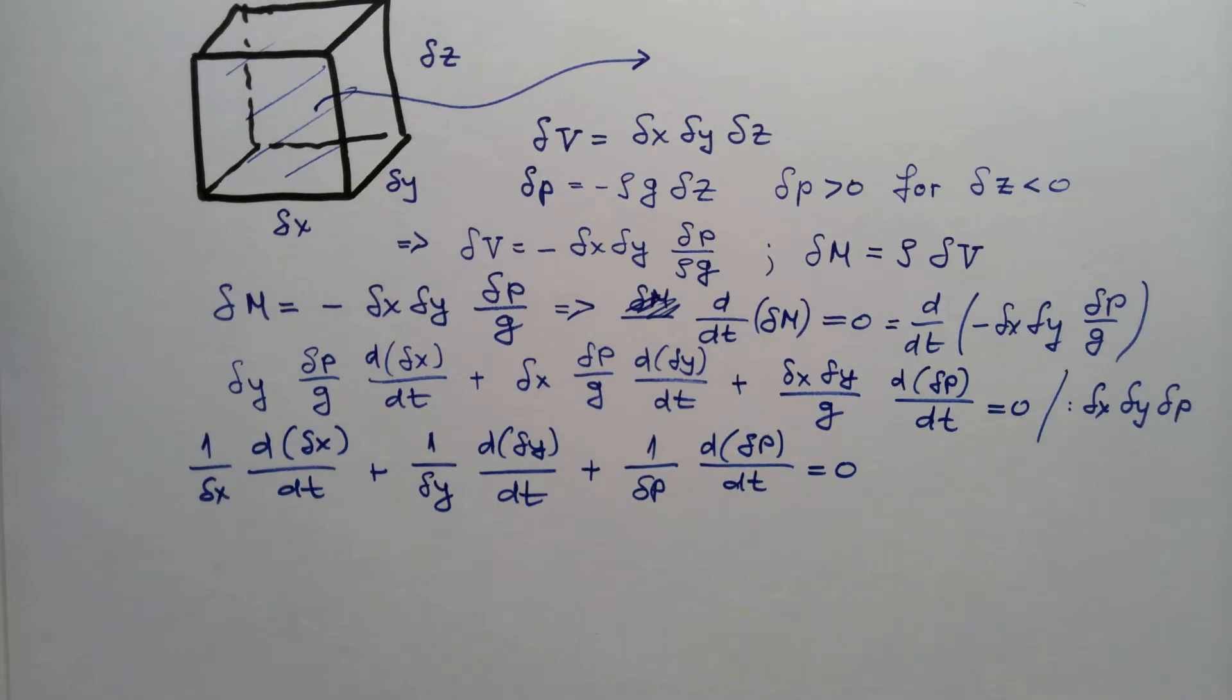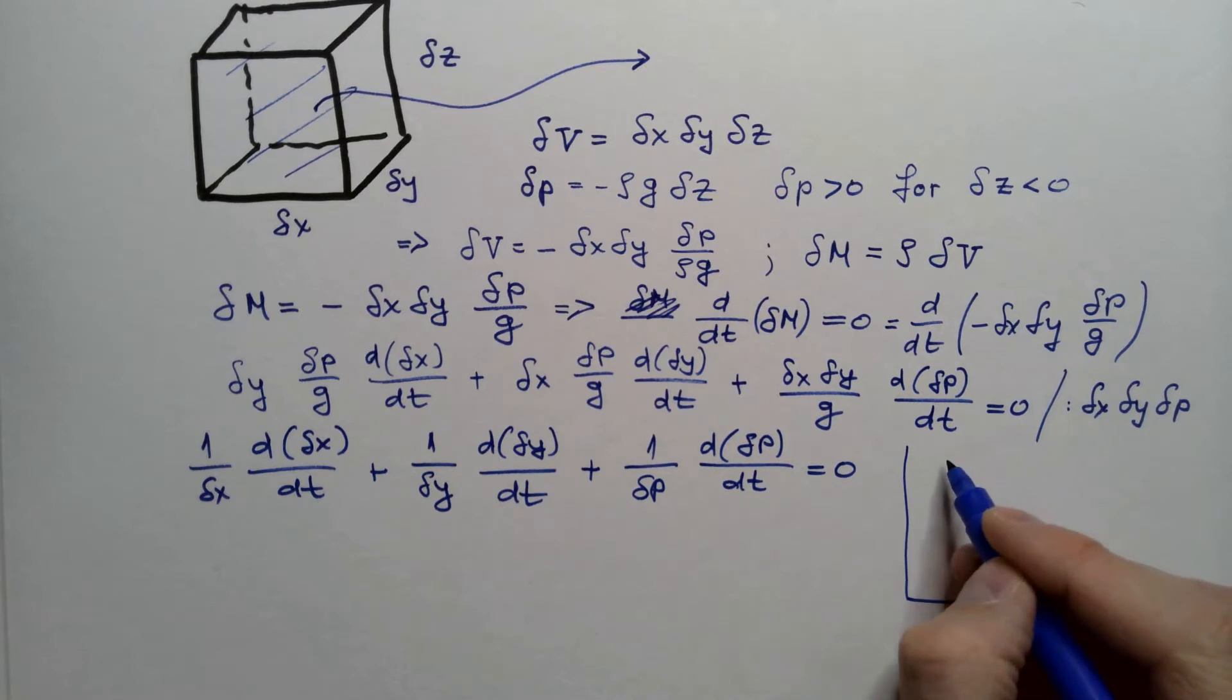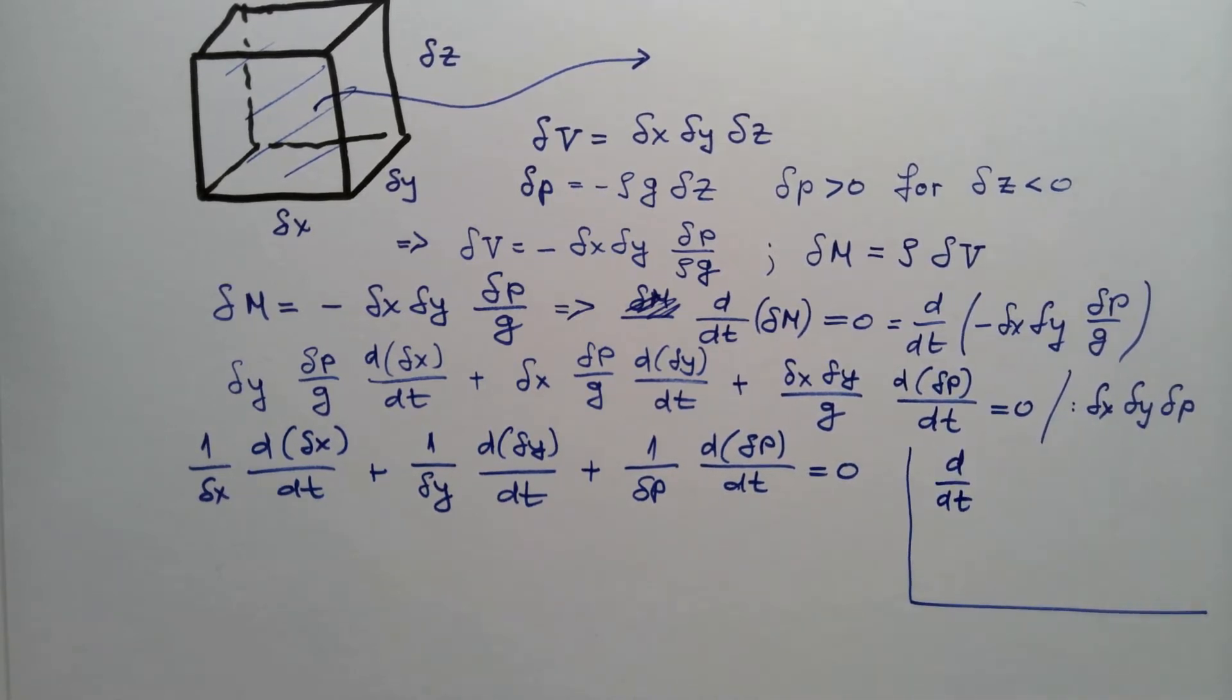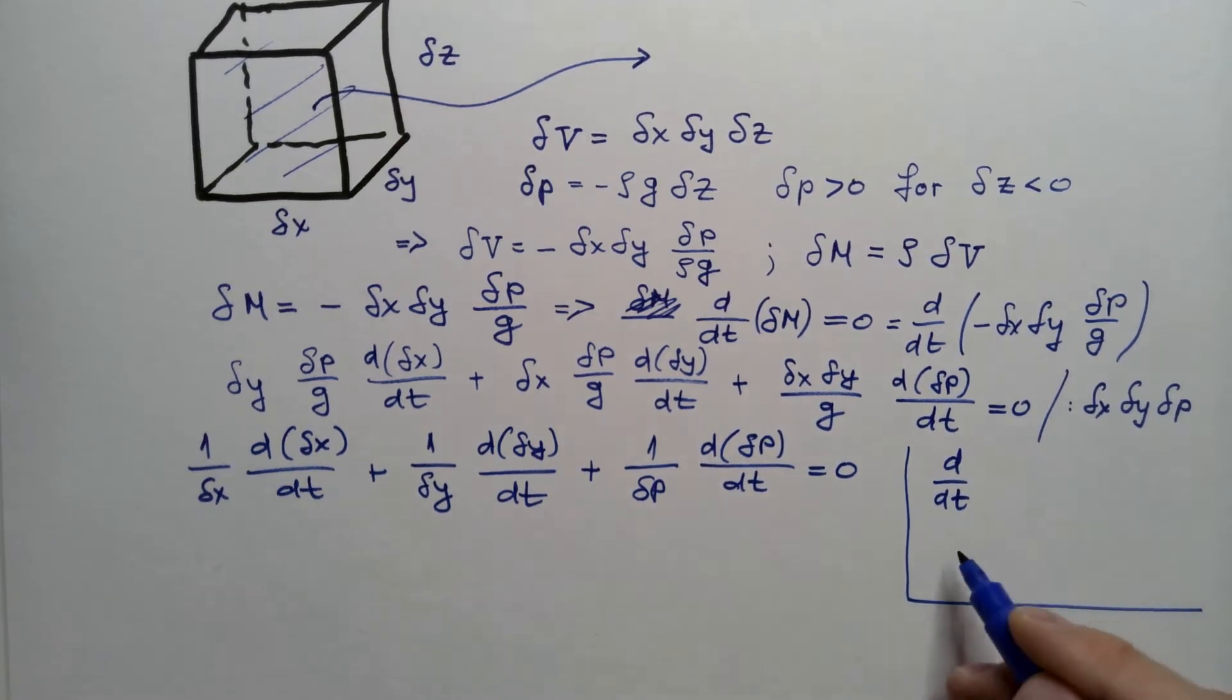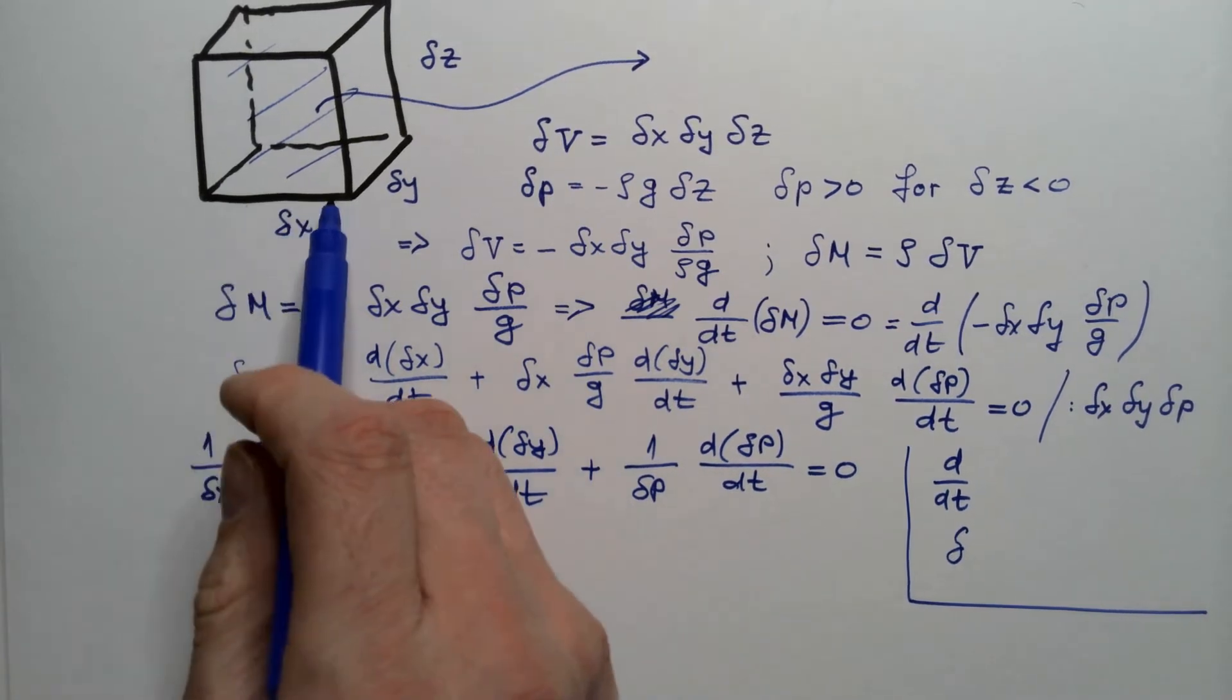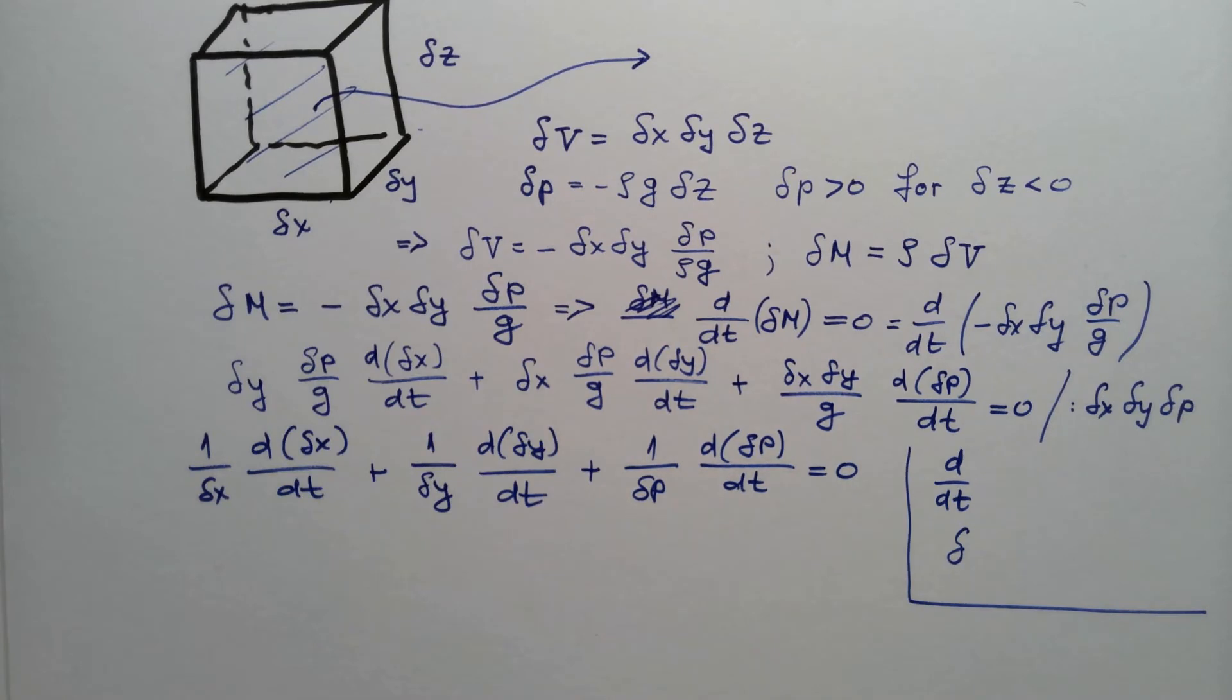Now we need to recognize something from mathematical analysis. This d dt is a differential operator and it's a linear differential operator. And this delta is a small difference, delta x delta y delta z. Because d dt is a linear operator, as well as delta, we can exchange the order of d dt and delta.